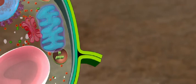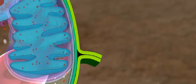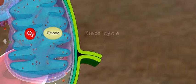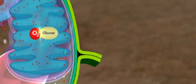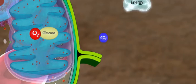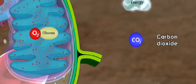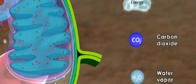The cells of the mesophyll contain mitochondria where oxygen will react with glucose in a biochemical process known as Krebs cycle. During this process, there will be a release of energy, carbon dioxide and water vapor.